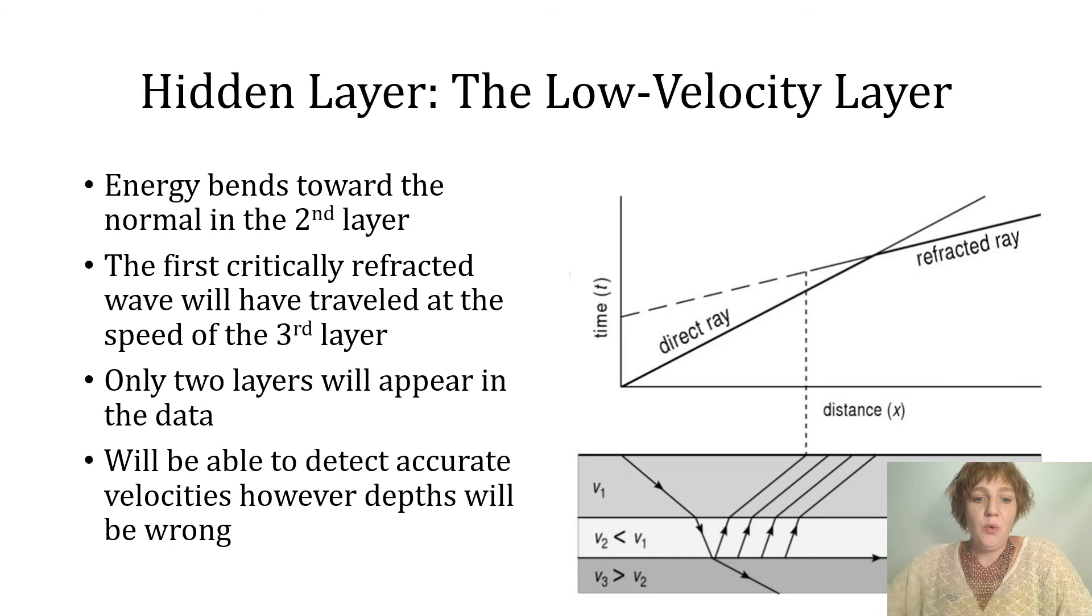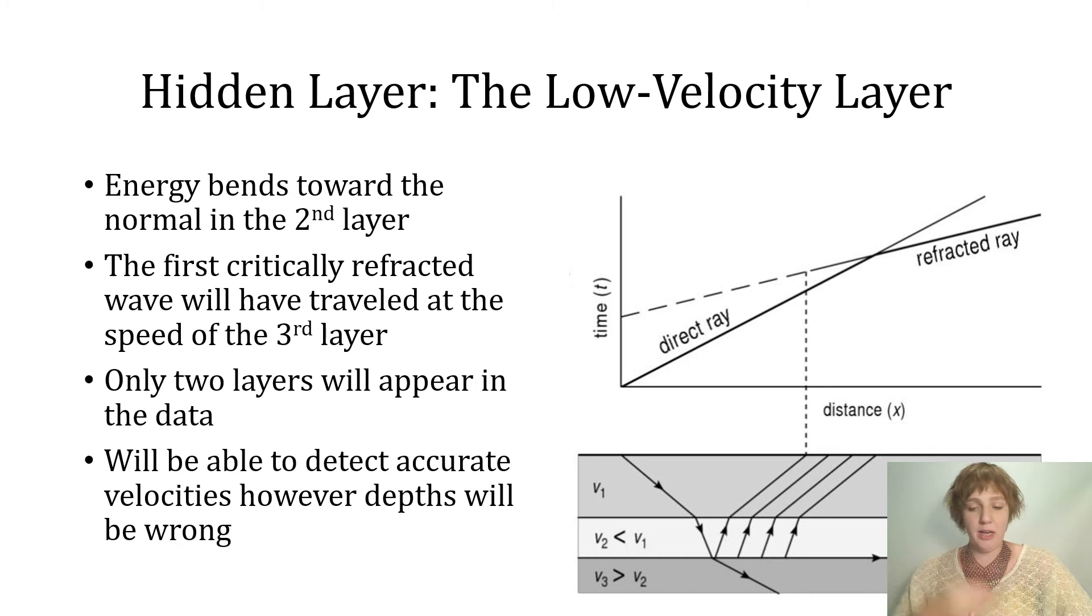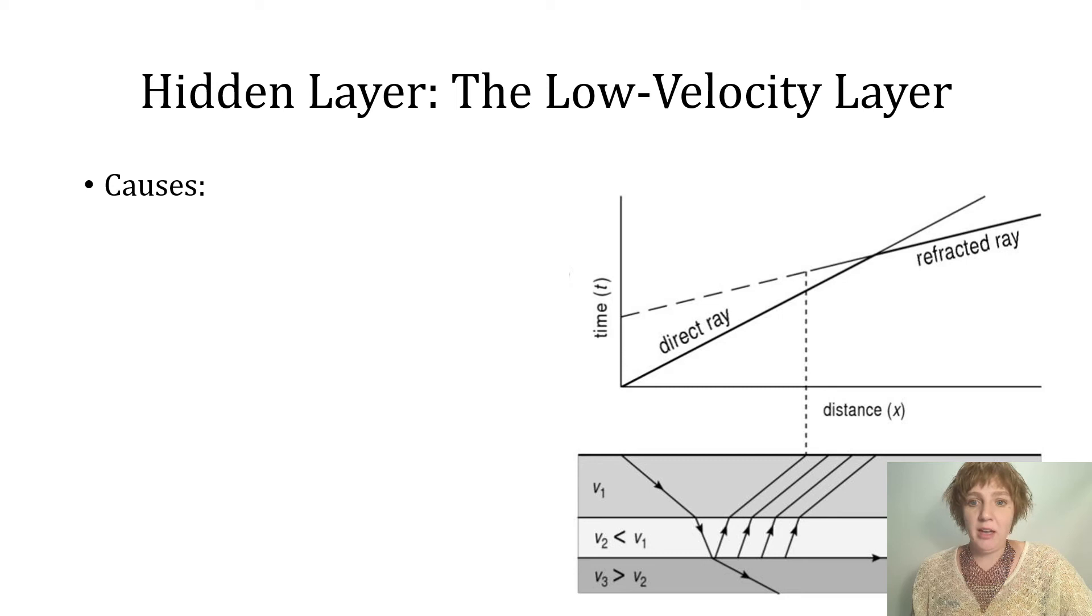We will be able to detect accurate velocities in this case, but your depths will be incorrect. There are multiple causes for a low velocity layer. If you had sand beneath clay, sedimentary rock beneath igneous rock, or sandstone beneath limestone, those are some of the more common examples.